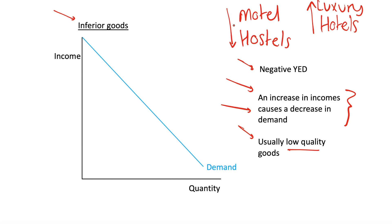Inferior goods will tend to do better when incomes decrease — people will tend to increase their spending on inferior goods because they have lower income, so they'll buy lower quality goods to save money.